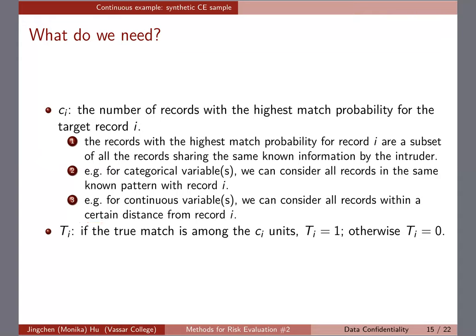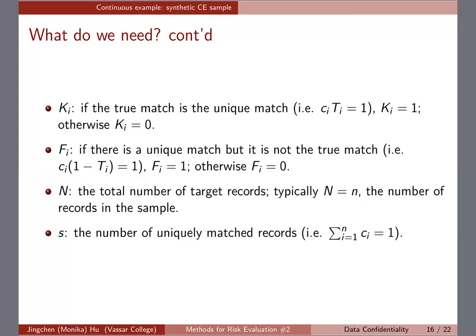We have TI: if it's the true match among the CI value, TI equals one; TI equals zero otherwise. We have KI, FI, N, and S. KI equals one if CI times TI equals one — the only possibility is CI equals one and TI equals one, meaning it is among the matches and it's a unique match. That's how we declare a true unique match. FI is CI times one minus TI equals one — so CI equals one but TI equals zero — meaning it's a unique match but not the true match. That's when FI equals one; FI equals zero otherwise.